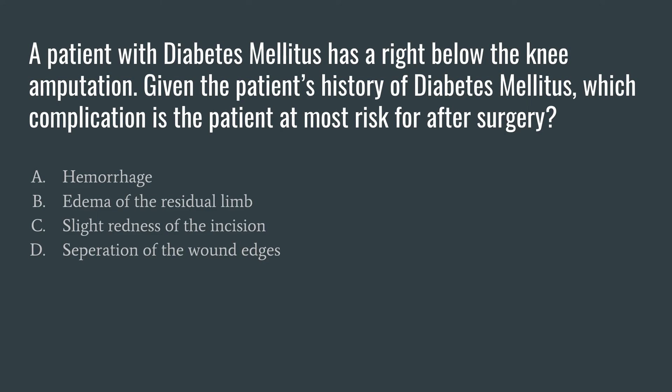Slight redness of the incision is going to be completely normal post-operatively. And then D, separation of the wound edges — this is dealing with delayed wound healing, which patients with diabetes are at risk for. So D would be our answer. A and B are both expected in all patients post-op, and C is expected as well. D is the only complication that a patient with diabetes is specifically at risk for.